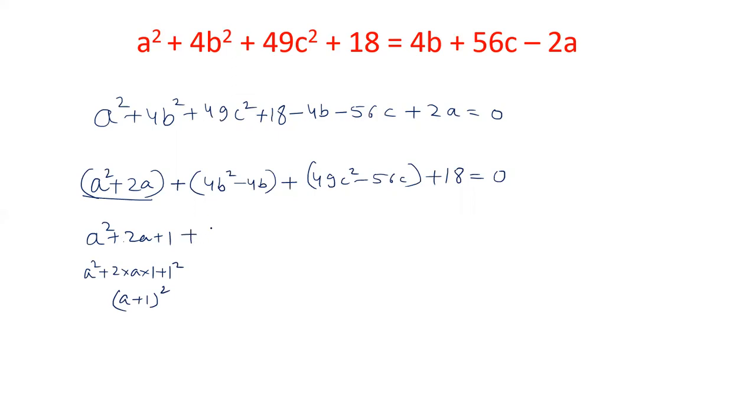Similarly, the second term can be converted to perfect square by adding 1. That will be (2b)² - 2 × 2b × 1 + 1². So we need 1 here also.